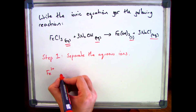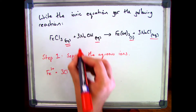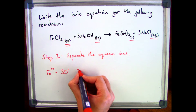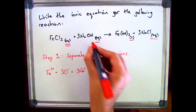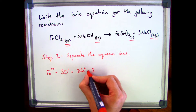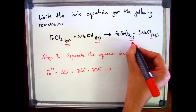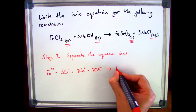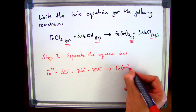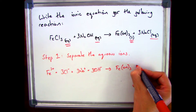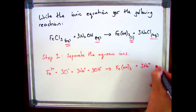On the left-hand side I've got Fe³⁺ and 3 Cl⁻, then 3 Na⁺ and 3 OH⁻. Do the same on the right-hand side. So I've got Fe(OH)₃ — that doesn't change because it's solid — and then 3 Na⁺ and 3 Cl⁻.